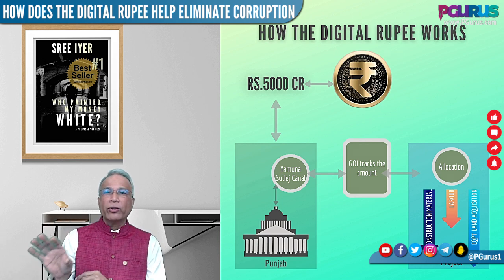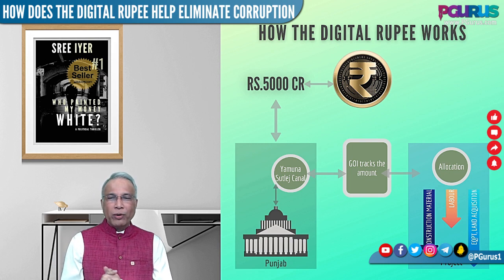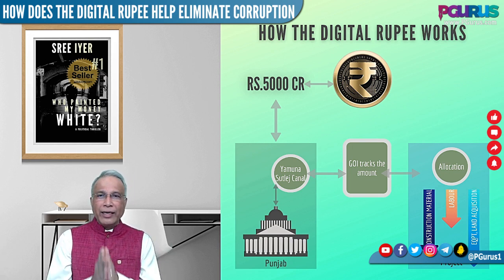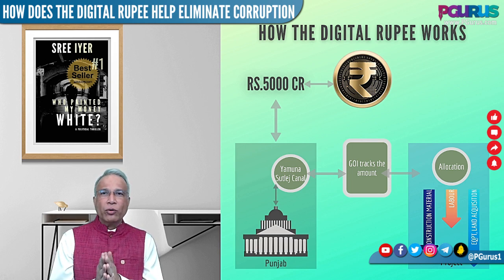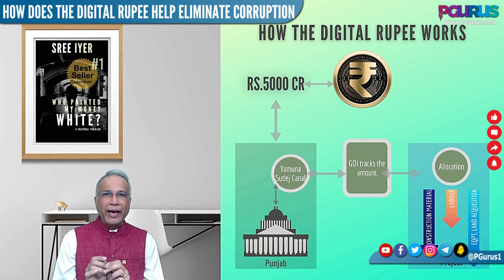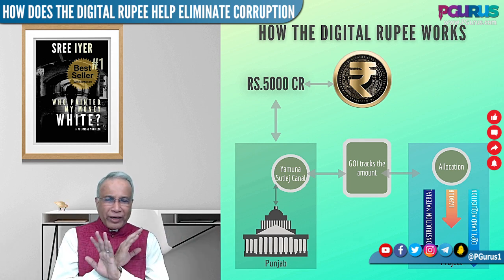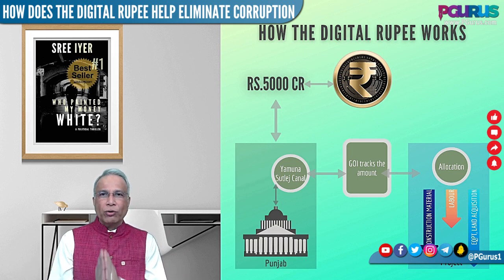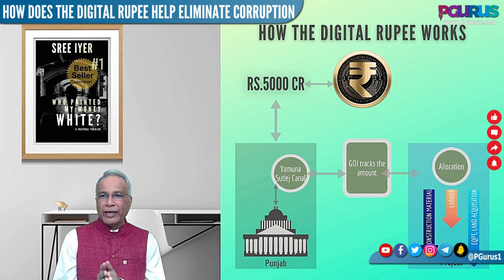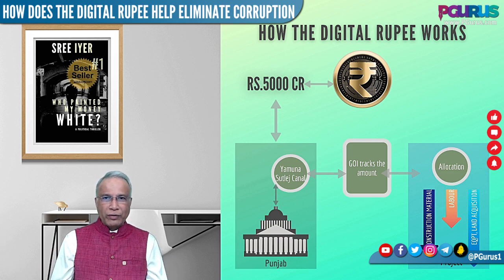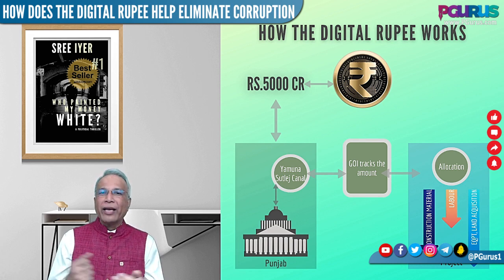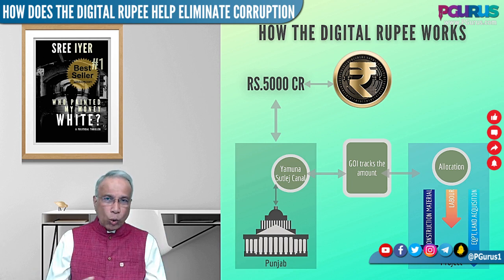The government will have a similar arrangement with Haryana to get the water into Delhi. So 5,000 crores in digital rupees is minted, with a signature that allows tracking of how that 5,000 crores is going to be used. Punjab gets the digital 5,000 crores rupees and it will be tracked by the Government of India according to how it was allocated — say, 2,000 crores for construction material, 1,000 crores for labour, and another 2,000 crores for equipment and land acquisition. The idea is to understand how this allocated money can be tracked using the digital rupee.